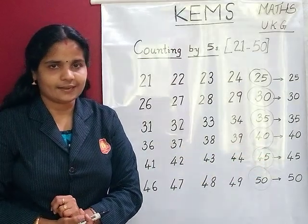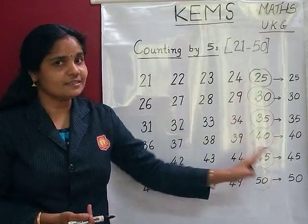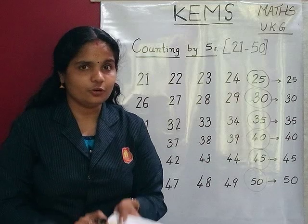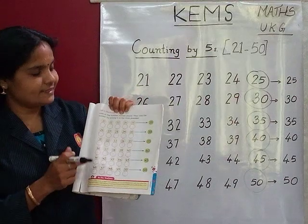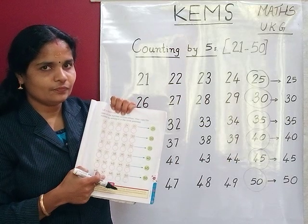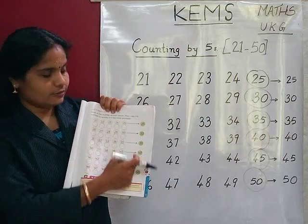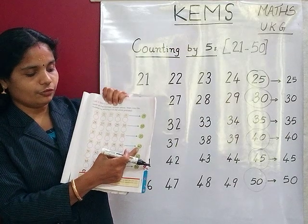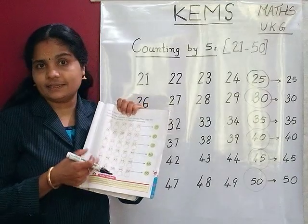So children, all of you write these numbers very well. So children, listen — in your book, in this page, write these numbers very neatly. Then here, counting by 5s: 25, 30, 35, 40, 45, 50. Understood? Write very neatly.